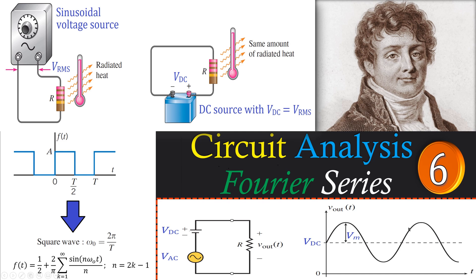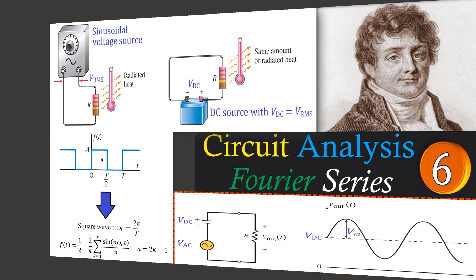Welcome back. We continue with the circuit analysis using Fourier series, and this is our example number six. In this example we will look at the problem where we calculate the dissipated power or radiated heat in a resistor where we have applied an input sinusoidal voltage source. So let's look at our example.